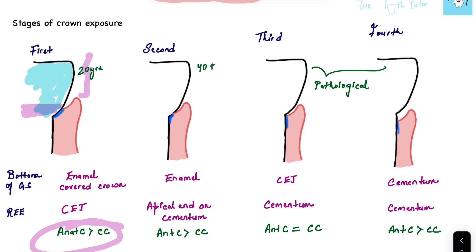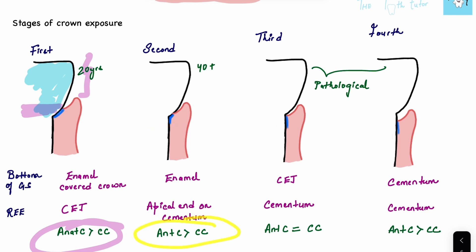In the second stage, the bottom of the gingival sulcus has shifted downward but is still at the enamel — it has not gone beyond the enamel. The apical end of the reduced enamel epithelium, which was at the cemento-enamel junction, is now on the cementum. The anatomical crown is still greater than the clinical crown because the gingival sulcus is still present on the enamel.